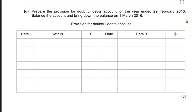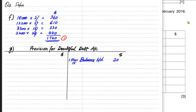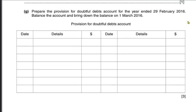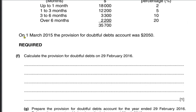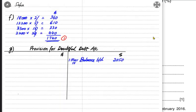If the year is ending on February 2016, then the year would start on March 2015. On 1st March 2016, the new year would start. The balance brought down of 2,050 is already given as the opening balance — the provision for doubtful debt account had a balance of 2,050 on 1st March 2015.